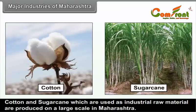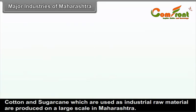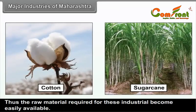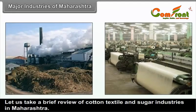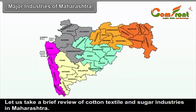Cotton and sugarcane, which are used as industrial raw materials, are produced on a large scale in Maharashtra. Thus, the raw material required for these industries becomes easily available. Let us take a brief review of cotton textile and sugar industries in Maharashtra.